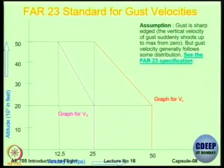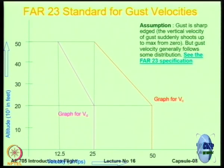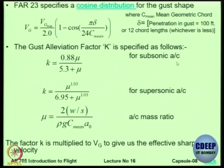This one is for a sharp gust but gust is never sharp right. I told you the gust will never be sharp, air will slowly start increasing and then resistance value. Therefore, there is something called as a gust alleviation factor.